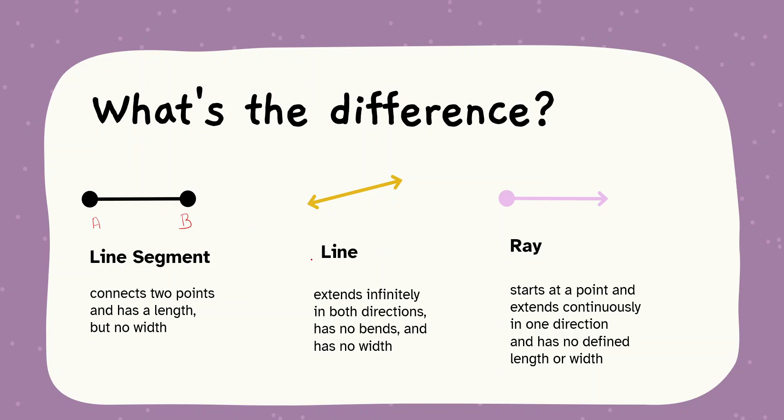A line. A line extends infinitely in both directions. Has no bends and no width. So this will be a line example. A ray. A ray starts at a point and extends continuously in one direction. Has no defined length or width. For example, sunrise. It has starting point is a single point and ending there is no end point for this array.